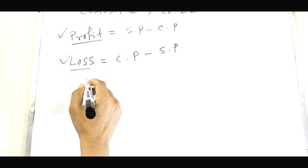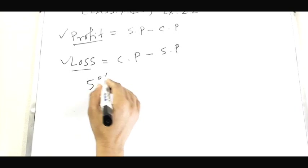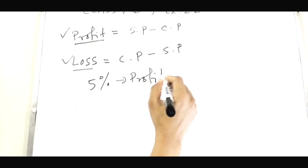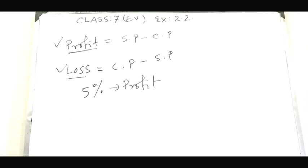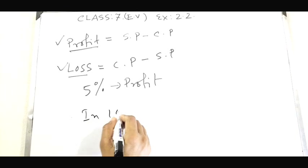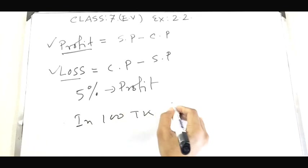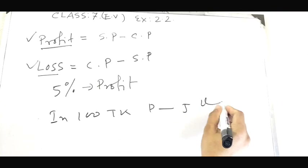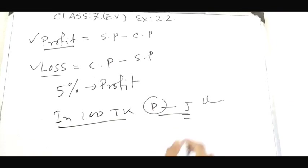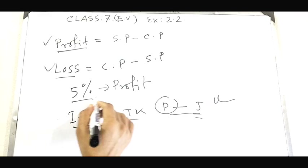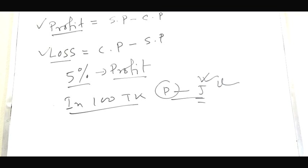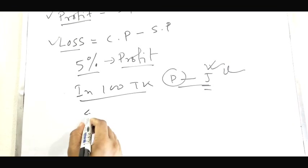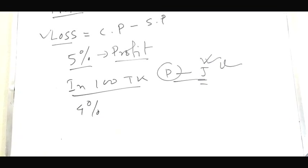If I ask you a question — 5% profit — what does it mean? 5% profit means the cost price is 100 and the profit is 5. So when cost price is 100, profit is 5%.